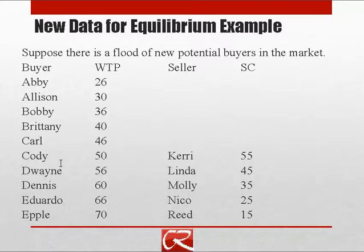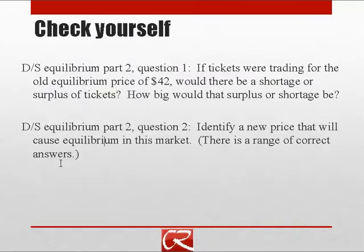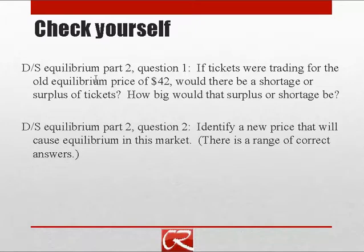You can go back to the second of the basics of demand lecture to see that. As a test for yourself, try to figure out the following two questions. The old equilibrium price was $42. With this new higher level of demand, would there be a shortage or surplus of tickets? And how big would that shortage or surplus be?